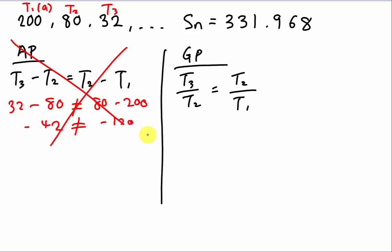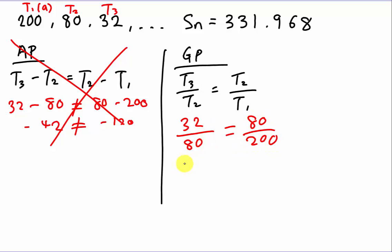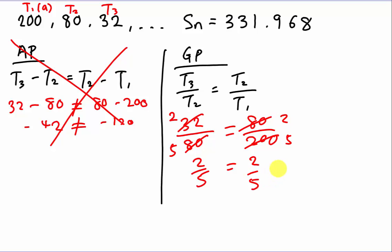Now let's check geometric progression. Take the third term, which is 32, divided by the second term, 80. Check whether it equals the second term 80 divided by the first term 200. Dividing both: 32 over 80 simplifies to 2 over 5, and 80 over 200 also simplifies to 2 over 5. Since they are the same, this is a GP.